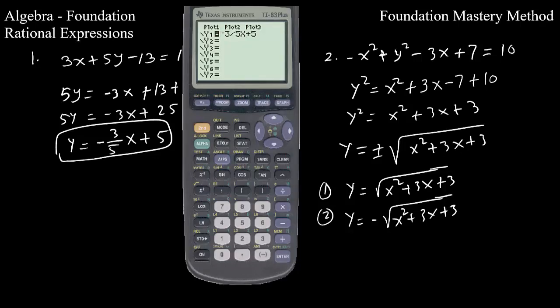Let us plot these equations in the calculator. So as we said, this is the equation of a straight line. So you can type y1, which is for y, negative 3/5 x plus 5. And then take the standard window. You can go to zoom 6. That will give you a standard window. So this is the equation of a straight line. Clearly, you can see the slope is negative. So it goes like that.